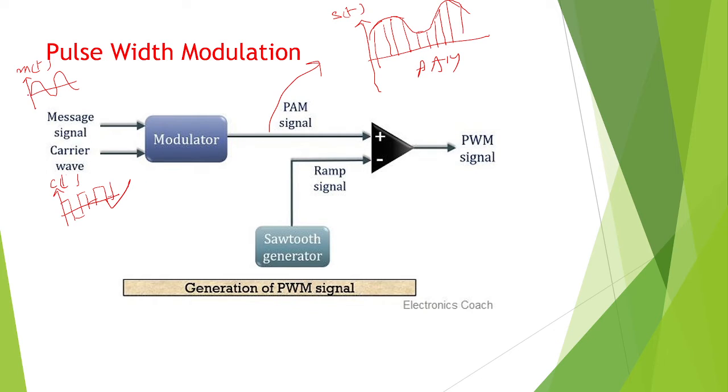Carrier is varied according to the message signal. Carrier signal matches the message signal. So that is PAM signal, Pulse Amplitude Modulation signal.